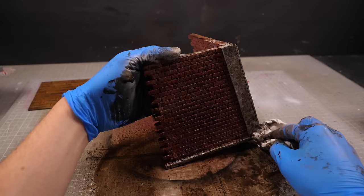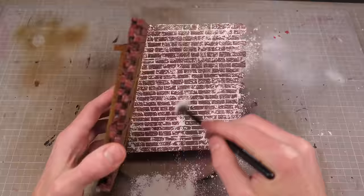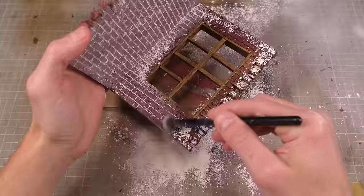I can then leave this to dry for an hour or so before coming back to grout my bricks. This is just a little pot of plaster of Paris that I'll sprinkle over my bricks, brush off the excess, then blast with some very very thin PVA glue.